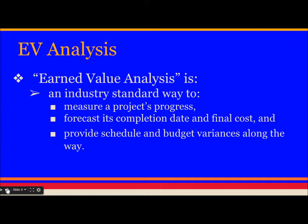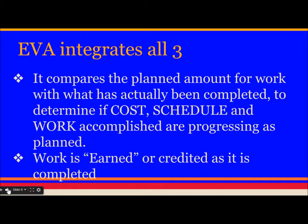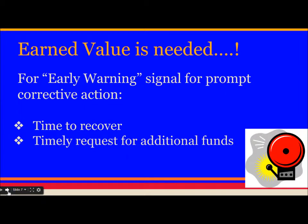Earned value analysis is an industry standard way to measure a project's progress, forecast its completion date and final cost, and provide schedule and budget variance along the way. Tracking is important — knowing where you are on schedule, on budget, and on work accomplished. EVA integrates all three. It compares the planned amount of work with what has actually been completed to determine if cost, schedule, and work accomplished are progressing as planned.